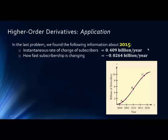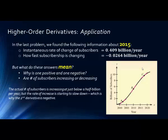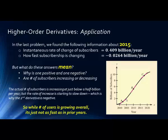In the last problem we found the following information. The instantaneous rate of change of subscribers in 2015 was 0.409 billion per year. So we're adding another almost a half a billion or 0.4 billion subscribers per year, 400 million. But how fast is subscribership changing? And what this is showing is that at B, what's happening now is that we are actually slowing down. Although the actual number of subscribers is still going up, what this is saying is the slope is starting to slow down. We're at 2015—it's not at B, it's right about here. So we can see that the curve is stopping being so steep and it's starting to level.